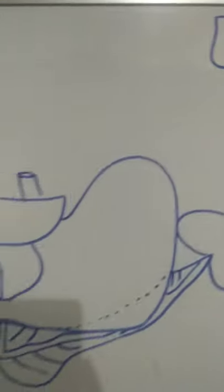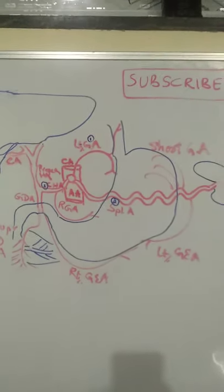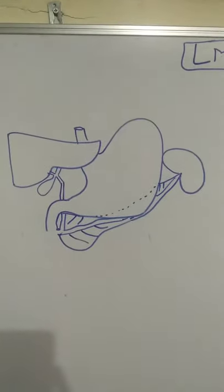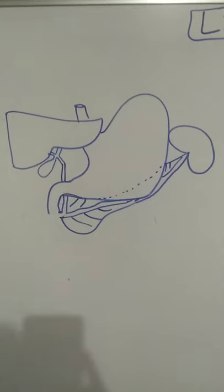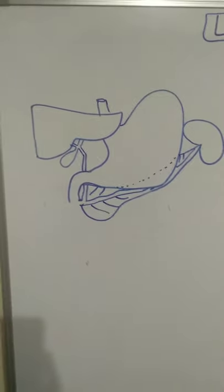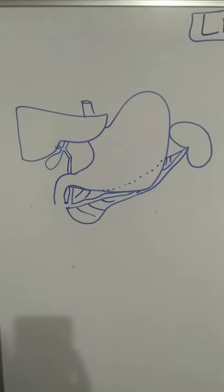Today's interesting topic is the development of the foregut with correlation to its blood supply. You should understand either the blood supply or the development clearly, so that you can make out the other one very easily. The foregut is that part of the yolk sac which is present within the head fold of the embryo.